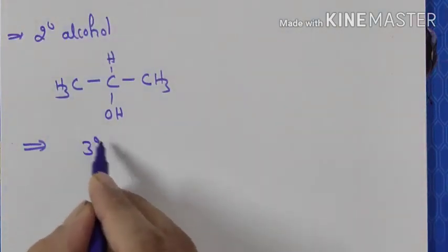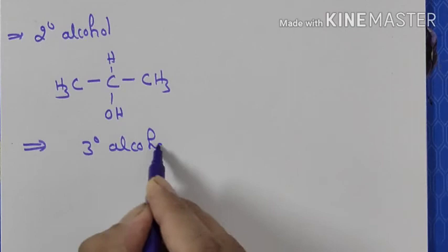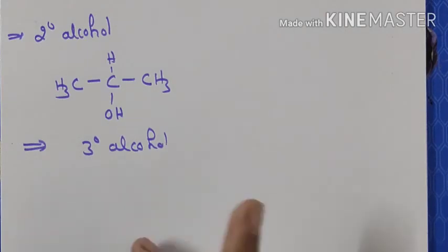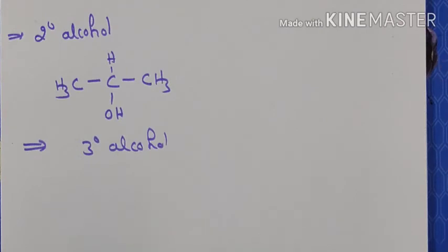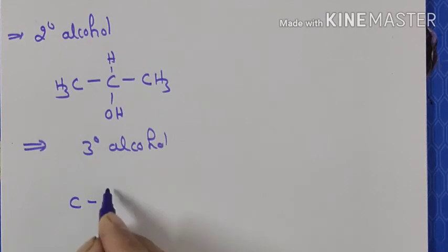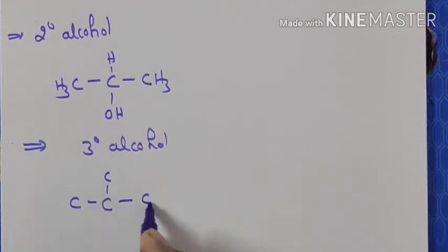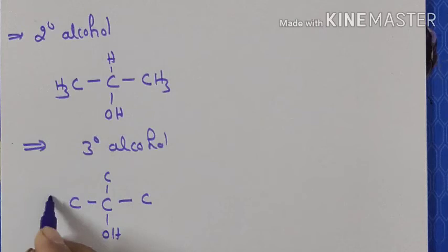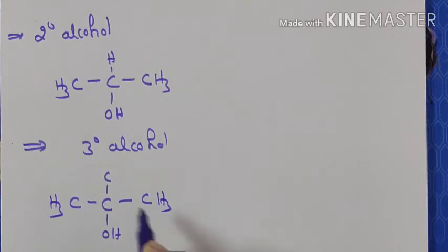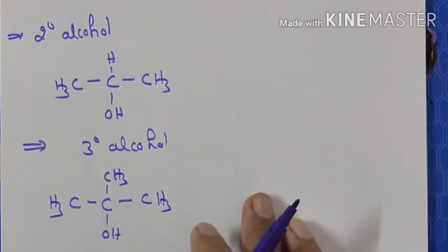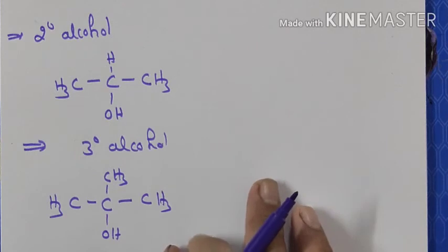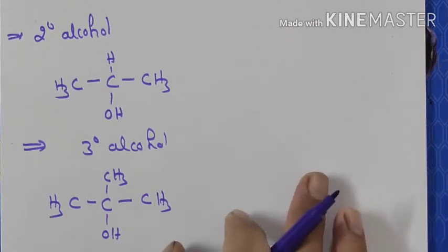Next is 3 degree — tertiary — alcohol. Tertiary alcohol is when the functional group OH is attached to a carbon that is a 3 degree carbon — that is, a carbon attached to 3 other carbons. If I write OH on such a carbon, it becomes 3 degree alcohol.